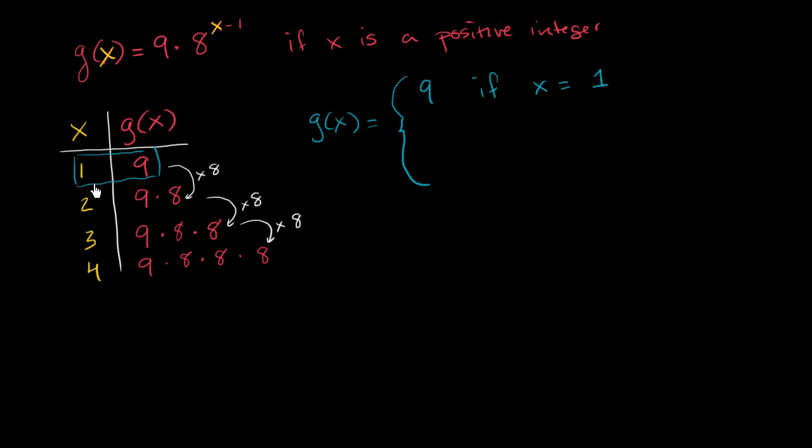And then if it equals anything else, it equals the previous g of x. So if we're looking at x minus 1 and then an x, if this entry right over here is g of x minus 1, however many times we multiply the 8 and we have a 9 in front, we know that g of x is going to be the previous entry, g of x minus 1, times 8.